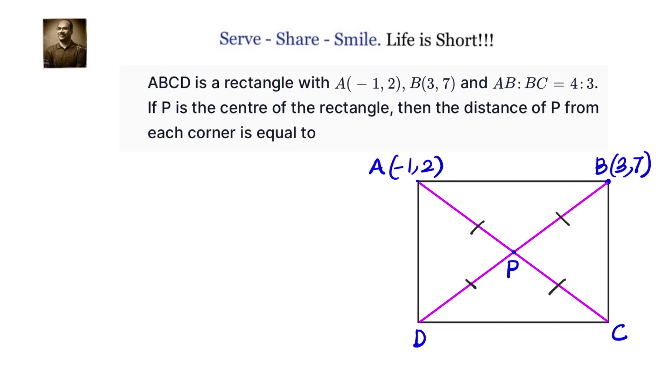Also we have been given A coordinates and B coordinates, so we can easily use the distance formula and calculate what is AB. Now how can we write AB by leveraging the distance AB? For that we have been supplied extra condition that AB by BC equals to 4 is to 3. Let us take AB as 4X and BC as 3X.